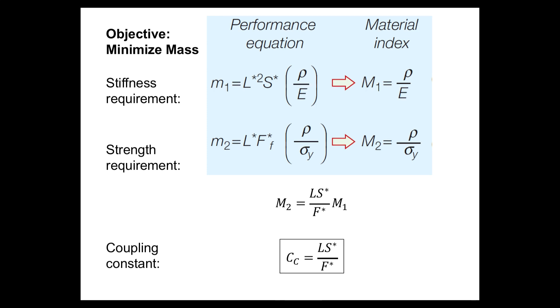The next step is that we need to determine the coupling constant and how these two are related. To find the coupling constant, we set our mass M1 equal to our mass M2. When we do that and we rearrange and group our terms together,